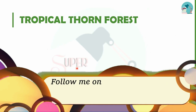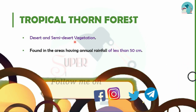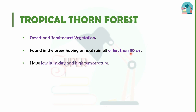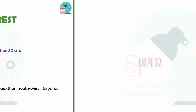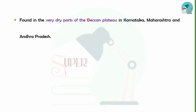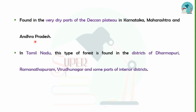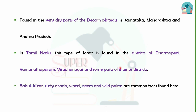The next type is tropical thorn forest — this is desert and semi-desert vegetation. Rainfall is less than 50 cm, humidity is low, and temperature is high. Trees here are plainly up to about 400 meters. This forest type is found in North-West India, West Rajasthan, South-West Haryana, North Gujarat, South-West Punjab, the dry parts of Deccan, Karnataka, Maharashtra, Andhra Pradesh, and in Tamil Nadu in Tirunelveli, Ramanathapuram, Virudhunagar districts. Most common trees are Babool, Khejri, Khair, Khair, Neem, and Wild Plums. Scrub is common vegetation in this type of forest.